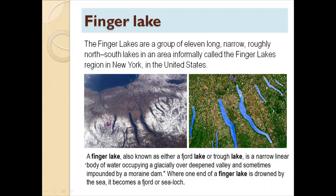You can see the 11 narrow, long lakes running from north to south in the images. A Finger Lake, also known as either a fjord lake or trough lake, is a narrow, linear body of water occupying a glacially over-deepened valley.